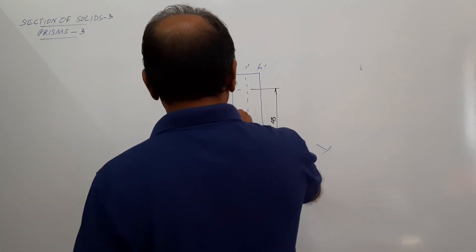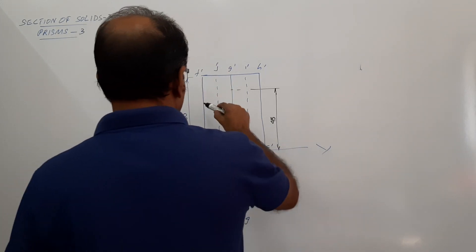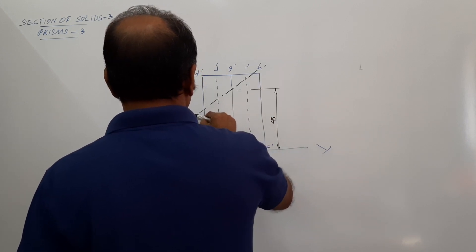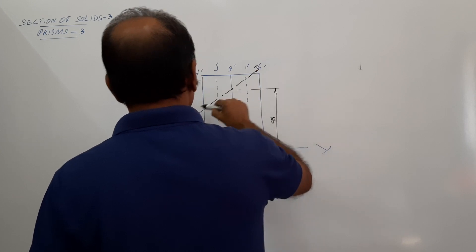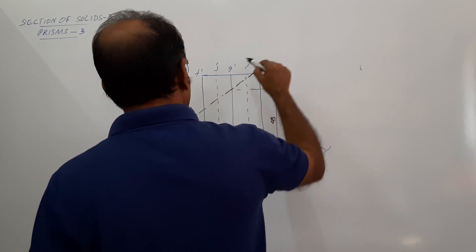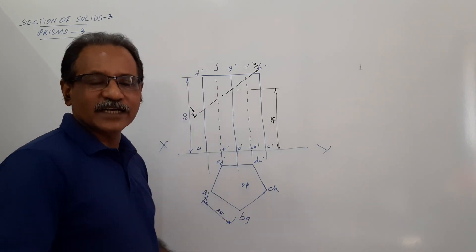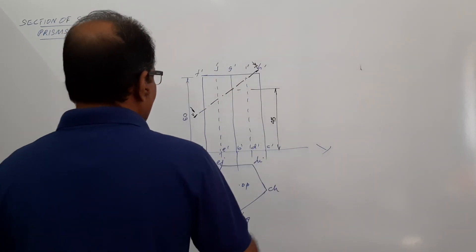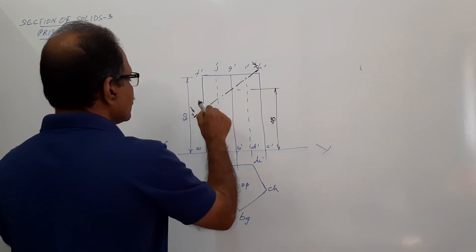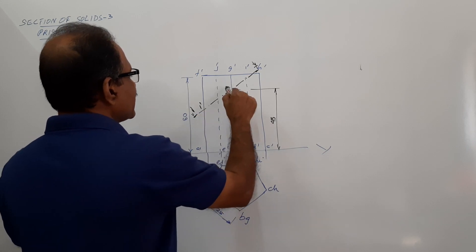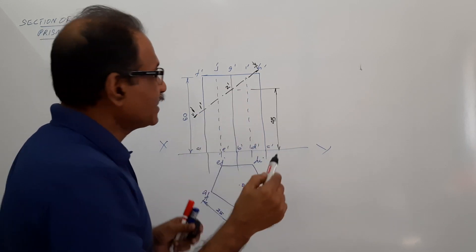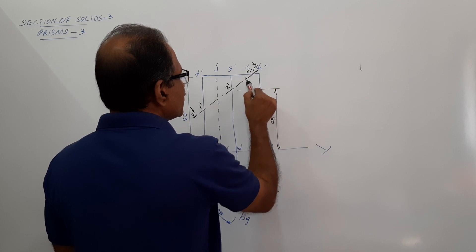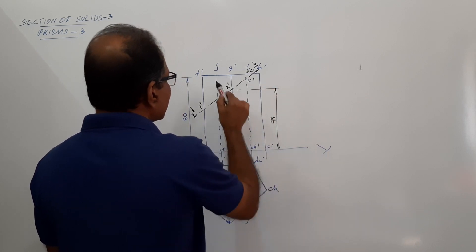So where is the cutting plane? This is the VT — this is the cutting plane. How many vertical edges does it cut? It cuts the vertical edge A'F' at 1', B'G' at 2', then it cuts the top at 3', top again at 4', vertical edge DI at 5', and vertical edge EJ at 6'.